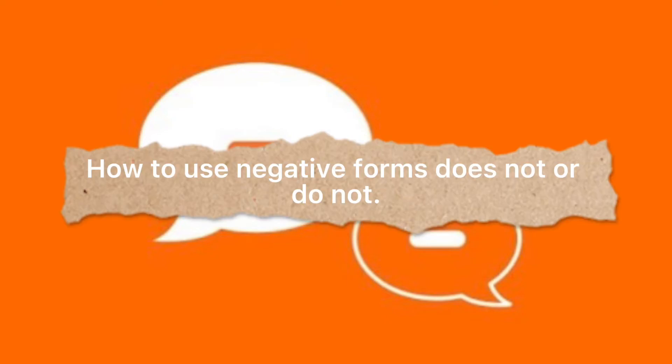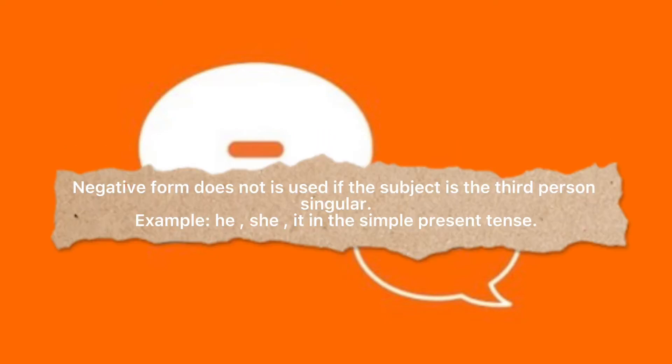The negative form 'does not' is used if the subject is the third person singular — he, she, or it — in the simple present tense.